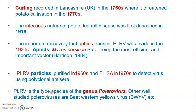Potato Leaf Roll Virus is the type species of the genus Polerovirus, meaning this genus is based on PLRV. Other viruses have been classified in the genus Polerovirus after PLRV, making it the founding virus of the genus. Other well-studied poleroviruses include Beet Western Yellows Virus and many others, but PLRV remains the type species.